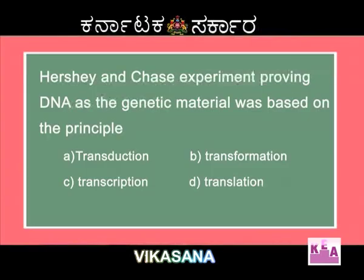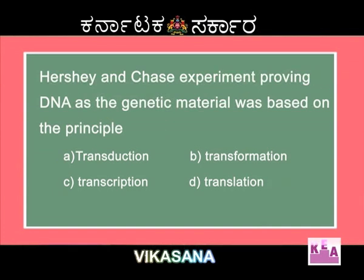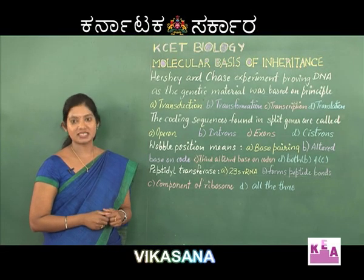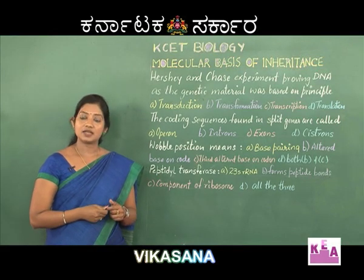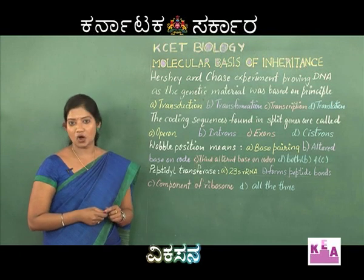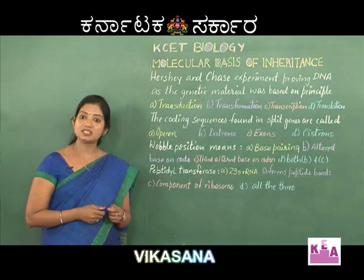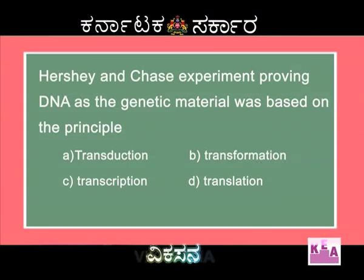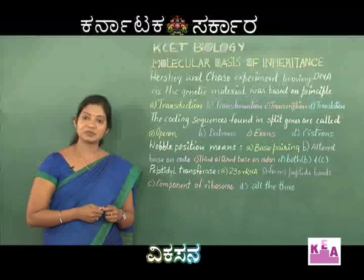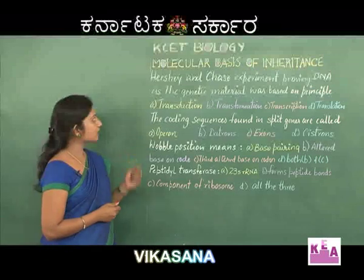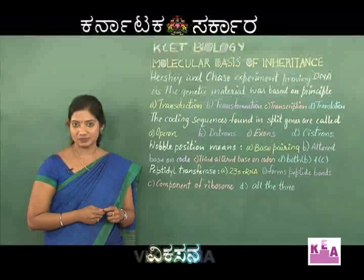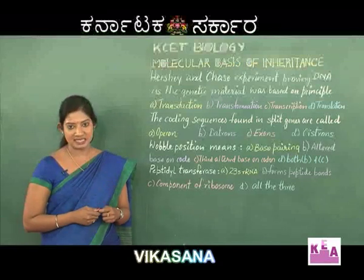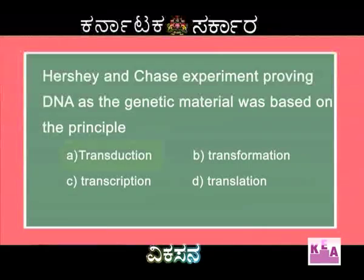Hershey and Chase experiment proving DNA as the genetic material was based on which principle? Transduction is the transfer of genetic material into a bacterial cell with the help of a virus. Transformation is the change of a bacterial cell due to the direct entry of DNA. Transcription is the synthesis of RNA from a DNA template. Translation is the production of a polypeptide chain from a messenger RNA. In the Hershey and Chase experiment, bacterial cells were infected with the help of bacteriophages — viruses which infect bacterial cells — so the right option is A: Transduction.